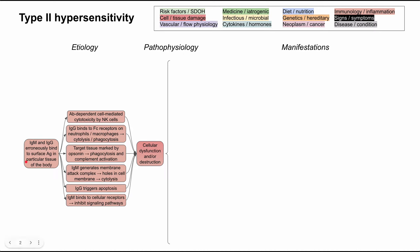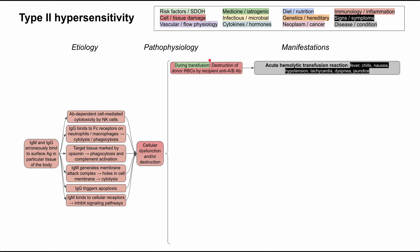This typically affects a particular tissue of the body. An acute hemolytic transfusion reaction occurs during blood transfusion, with destruction of the donor red blood cells by the recipient's antibodies. The recipient might have anti-A or anti-B antibodies that become activated by the donor's red blood cells. It can present as fever, chills, nausea, hypotension, tachycardia — a shock picture — dyspnea, and jaundice from hemolytic anemia. Treatment would be to stop the transfusion and give medicines to slow down the reaction.